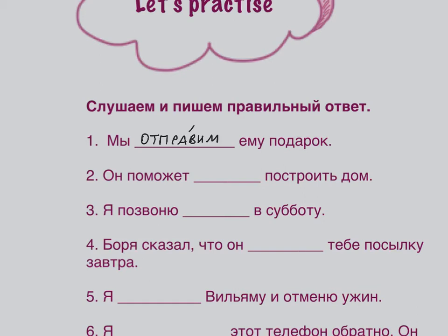Number 2: ОН ПОМОЖЕТ ТЕБЕ ПОСТРОИТЬ ДОМ — he will help you build a house. The key word is ПОМОЖЕТ. ТЕБЕ is dative.